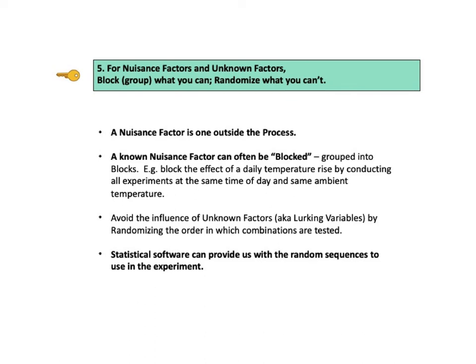There can also be factors affecting y which we don't know about. Obviously we can't block what we don't know, but we can often avoid the influence of unknown factors — also known as lurking variables — by randomizing the order in which the experimental combinations are tested. For example, unbeknownst to us, the worker performing the experiment may get tired over time, or conversely may get in a groove and perform better. So we randomize the order in which we test the combinations. Statistical software can provide the random sequences to use.